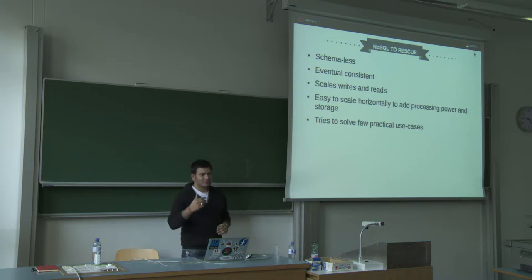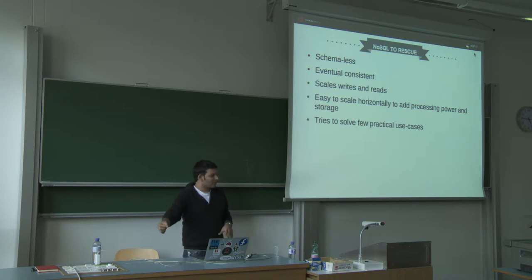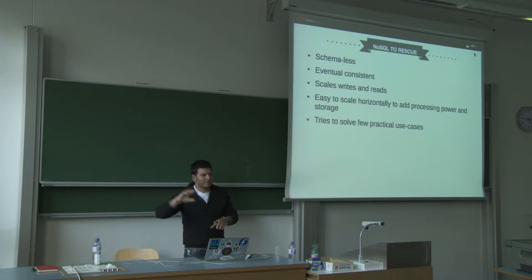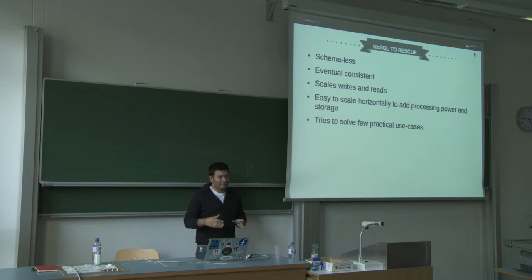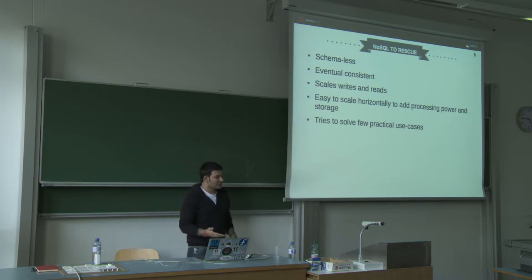For example, when you post on Facebook, Facebook has many clusters of databases. If you post on your wall, it's not guaranteed that all your friends will see the data at the same moment because they may be hitting different databases. Eventually everyone will see it, but people may see it at different times. Facebook doesn't need to be real-time consistent because nothing critical happens if someone gets the data 5 or 10 seconds later.